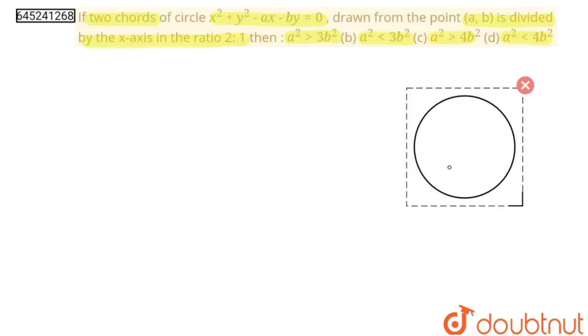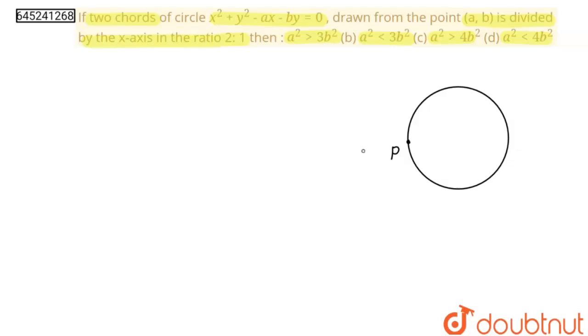So suppose this is our circle, and there is one point P at (a,b). From here we draw two chords.